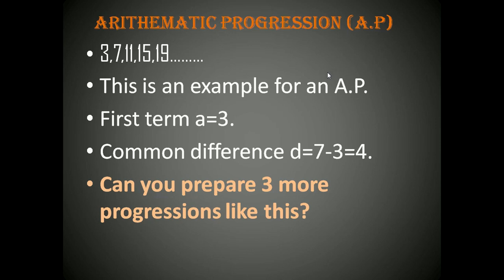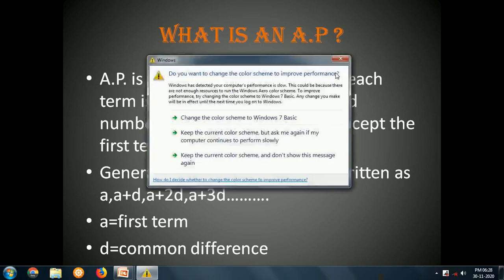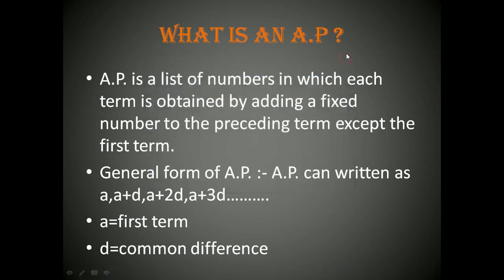What is the definition of an AP? An AP is a list of numbers in which each term is obtained by adding a fixed number to the preceding term, except the first term. The general form of an AP is: a, a+d, a+2d, a+3d, and so on, where 'a' is the first term and 'd' is the common difference maintained throughout the series.